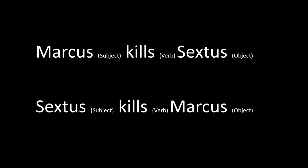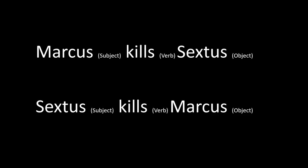How do we know that Marcus is the subject of this sentence and that Sextus is the object? The answer is that generally speaking in English, the subject comes before the verb, and the object comes after the verb. Therefore Marcus is the subject because it comes before the verb kills, and Sextus is the object because it comes after the verb. If we change the order of the words in the sentence, so that Sextus kills Marcus, we change the meaning of the sentence. Sextus, because he comes before kills, is now the subject. Marcus, because he comes after kills, is now the object.